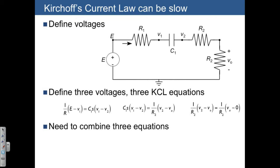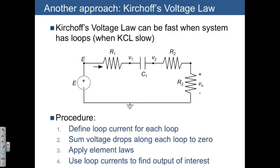Here's where Kirchhoff's voltage law can be useful. The idea is that we work in terms of loops. Here, all the elements are arranged in one loop. So the procedure is to define a loop current for each of those loops, sum the voltage drops along each loop to equal zero, apply the element laws, and then use the loop currents that we found to find any outputs of interest.